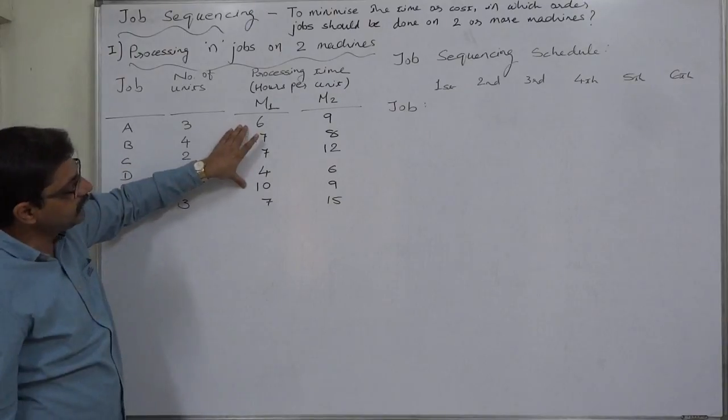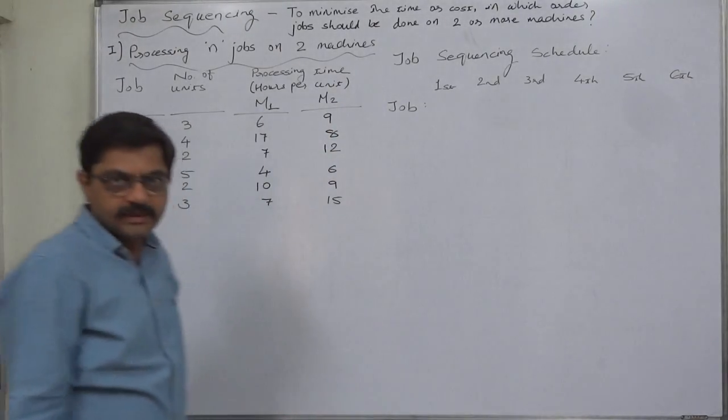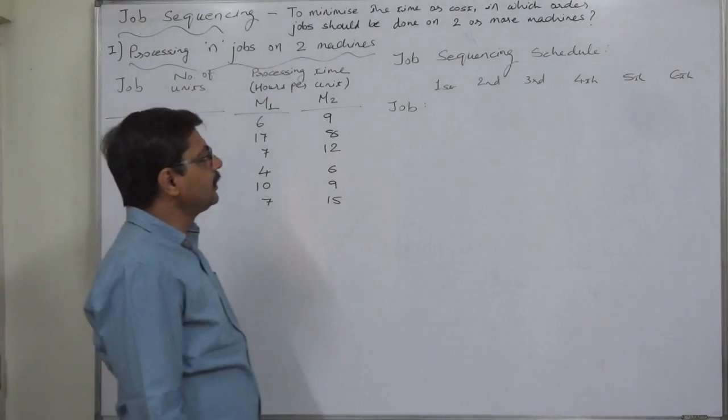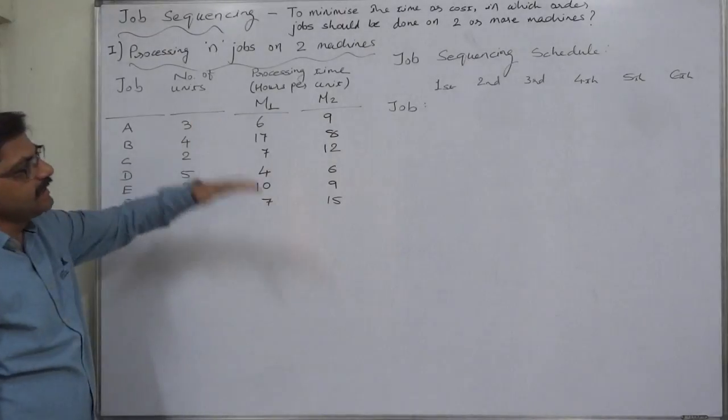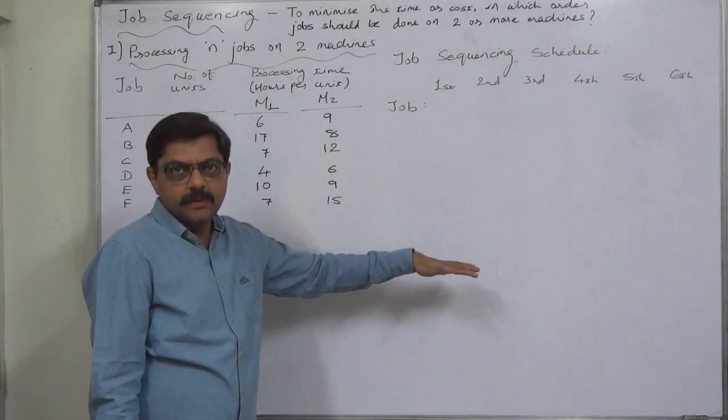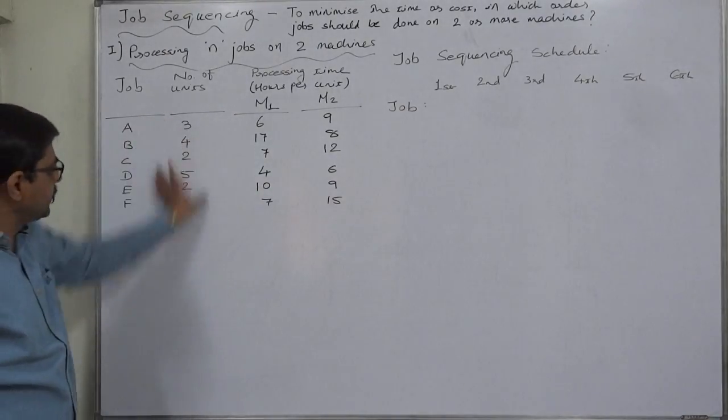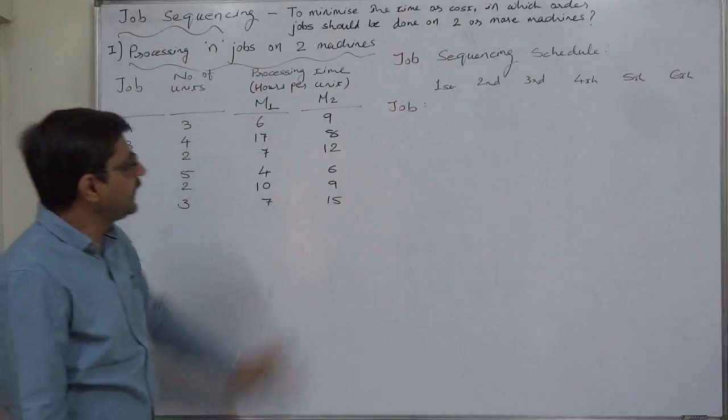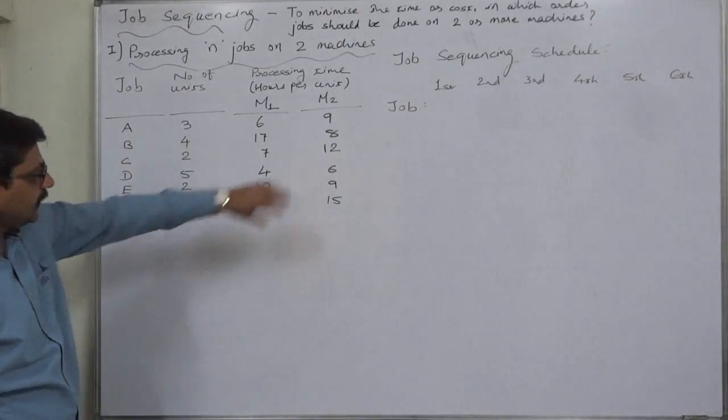On the basis of this, we first go for job sequencing—that means we determine the preference order. Then we can prepare the schedule or statement of minimum total time elapsed and idle time on the basis of the information regarding number of units and hours per unit. But first, on the basis of hours per unit, we prepare the job sequencing schedule.